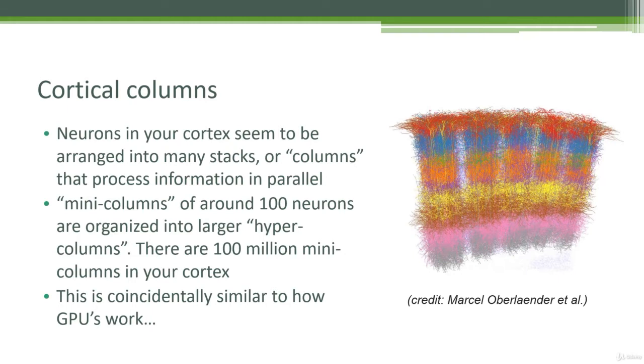Now each one of these columns is in turn made of these mini columns of around 100 neurons per mini column that are then organized into larger hyper columns. And within your cortex, there are about 100 million of these mini columns. So again, they just add up quickly.